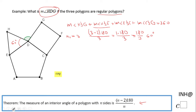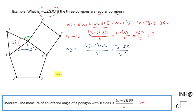Next is angle EDC. This polygon has five sides, so n₂ = 5. Using the formula: (5 − 2) × 180 ÷ 5 = 3 × 180 ÷ 5. To simplify, 180 ÷ 5 = 36, and 3 × 36 = 108. So this angle is 108 degrees.